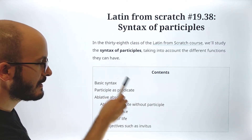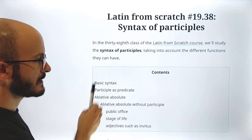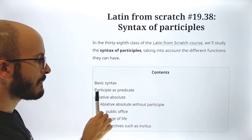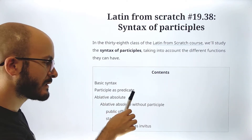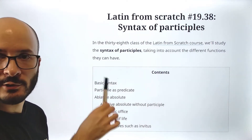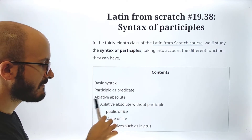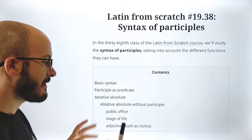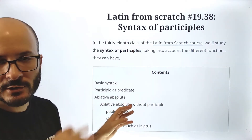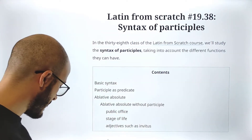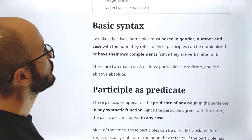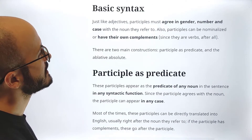Here we see the table of contents: the basic syntax, then the participles as predicate, the ablative absolute — this is super important — and then inside the ablative absolute we have more things. So we'll see. First, basic syntax.